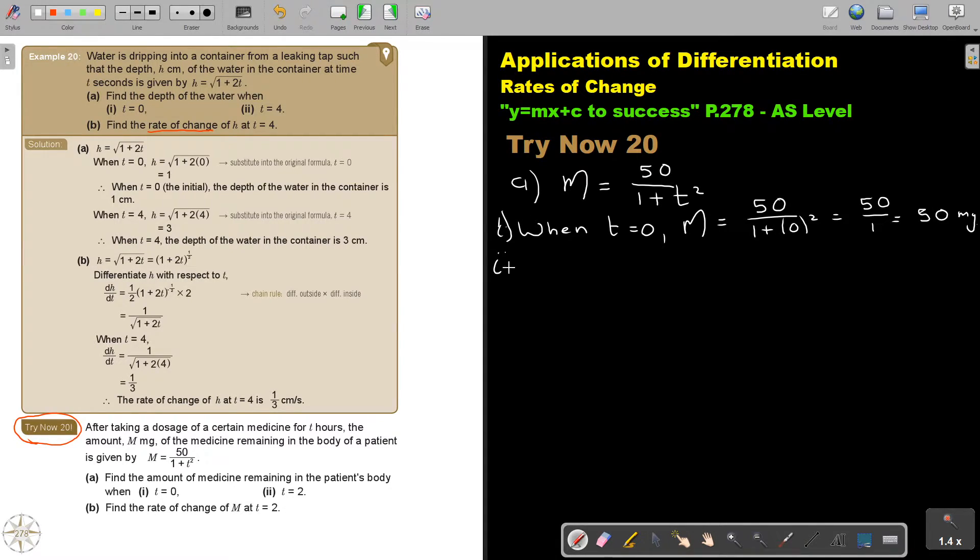Now the second one. When t is 2, I substitute 2. And that will give me an answer of 10. So the amount of medicine remaining is 10 milligrams.